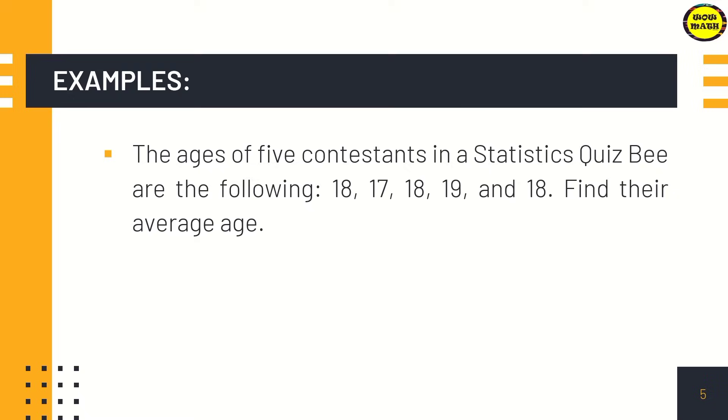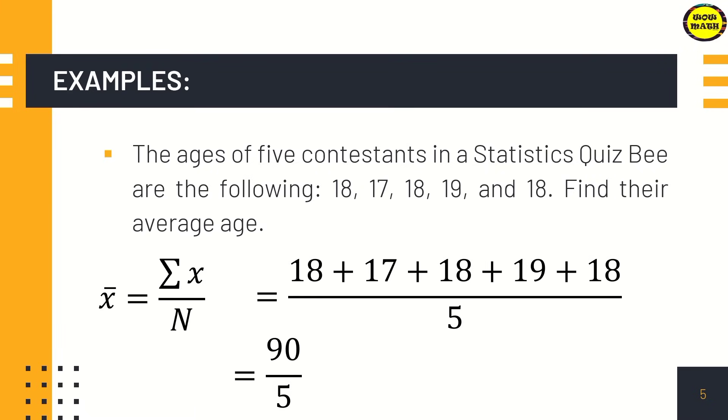Another example for the mean: the ages of the 5 contestants in a statistics quiz bee are 18, 17, 18, 19, and 18. Find their average age. Using the formula, we're going to add all the ages then divide the sum by 5. The sum is 90 divided by 5, that equals 18. Therefore, the mean age of the contestants is 18.